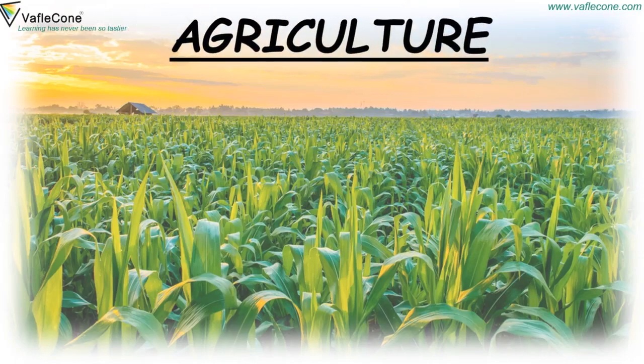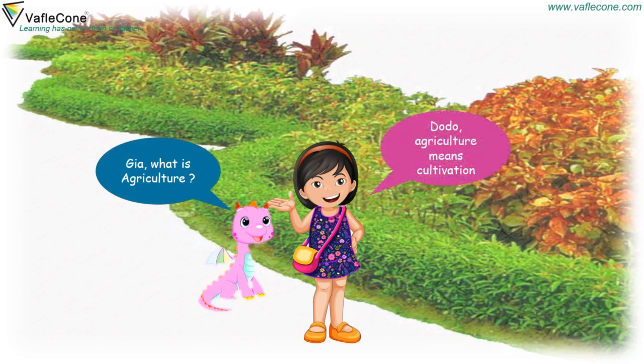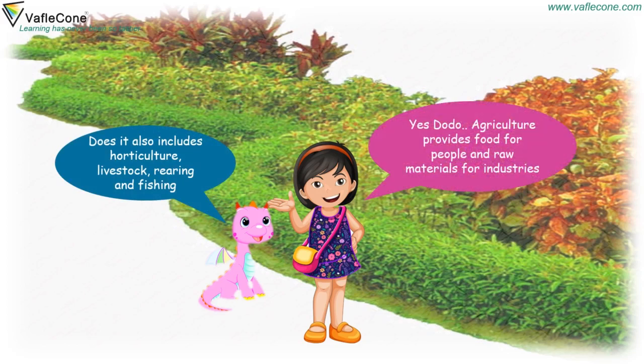Agriculture. Jiya, what is agriculture? Dodo, agriculture means cultivation. Does it also include horticulture, livestock, rearing and fishing? Yes, Dodo.